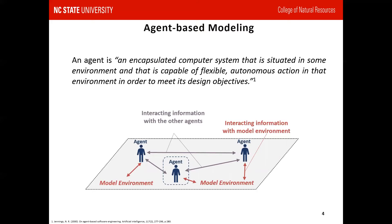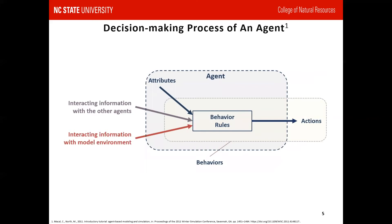Agents can automatically and adaptively make their own decisions according to three things: their own attributes, interacting information with other agents, and interacting information with the model environment. An agent can then make its own decisions and send out any information. The behavior rules here are assigned or set by the users themselves.